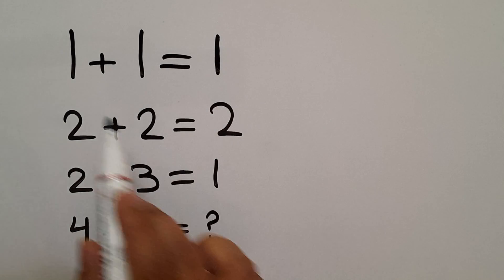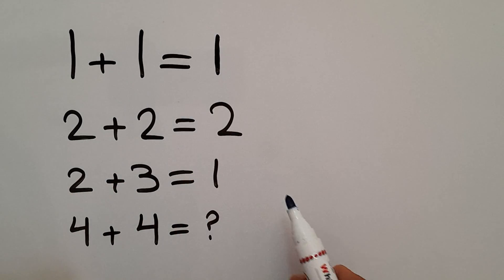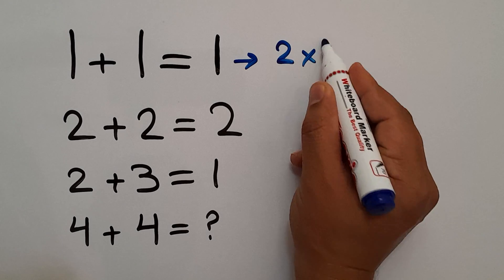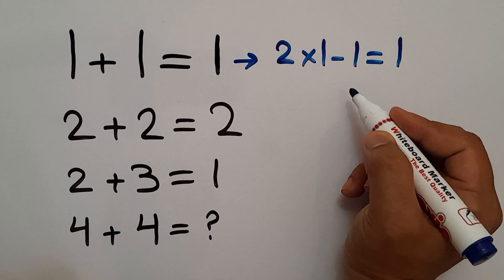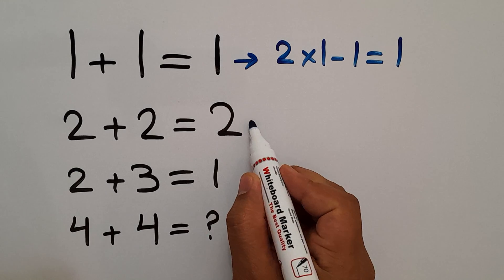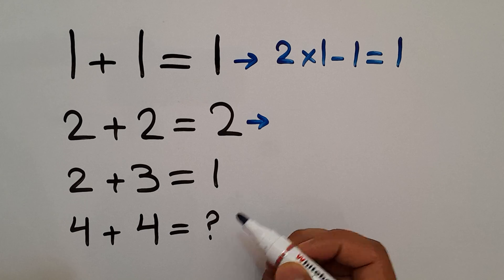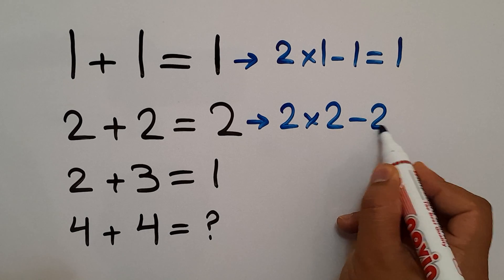Okay, in the first line we have 1, 1, and 1. 2 times 1 minus 1 equals 1, the right-hand side number. In the second line we have 2, 2, and 2. 2 times 2 minus 2 gives us 2, the right-hand side number.